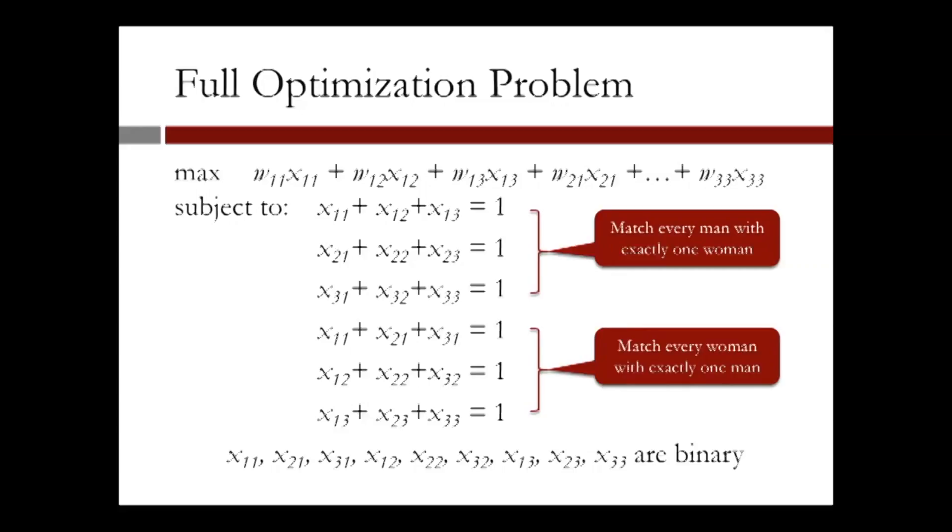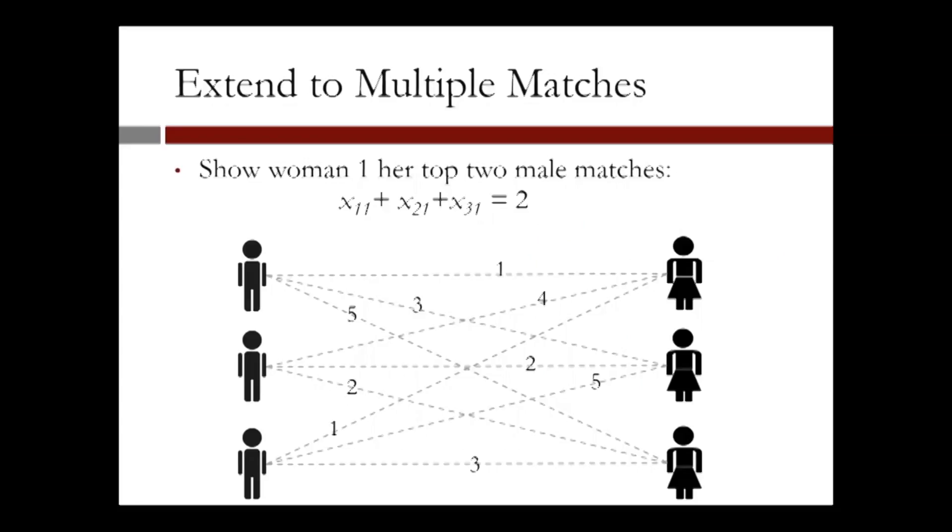Let us now extend the methodology to other areas. Suppose, for example, we want to show each woman its top two matches. This is represented by the constraint x11 plus x21 plus x31 is equal to 2.